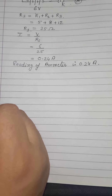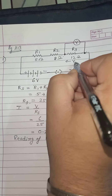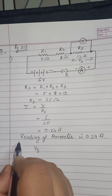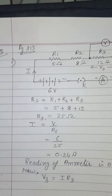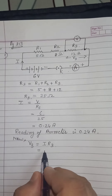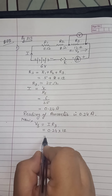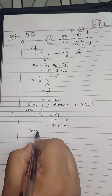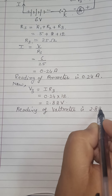We also need to find the reading of the voltmeter. For that, we calculate the potential difference across R3. Let the potential difference across R3 be V3. By Ohm's law, V3 equals I times R3. The current is the same throughout the circuit, which is 0.24 ampere, and R3 is 12 ohm. Multiplying gives 2.88 volt. So the reading of the voltmeter is 2.88 volt.